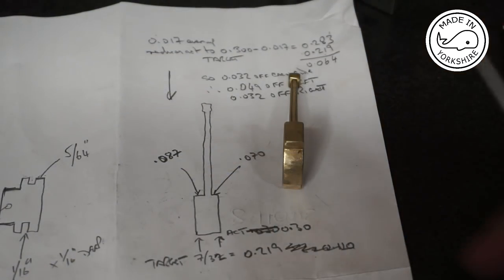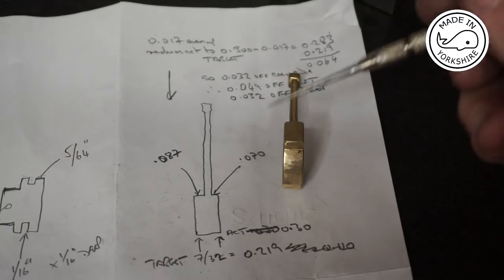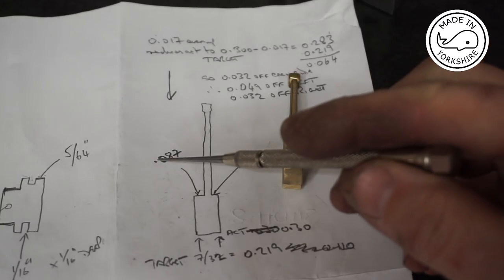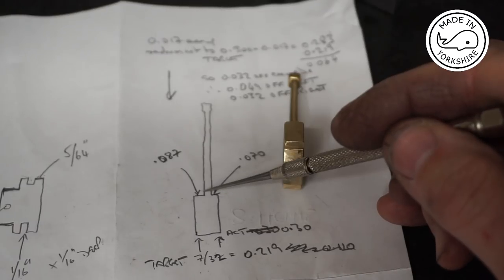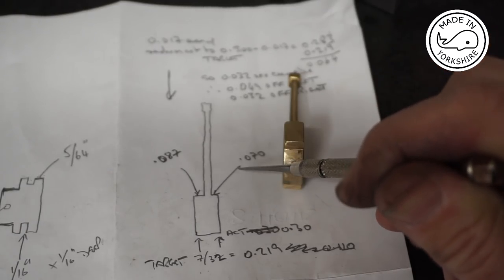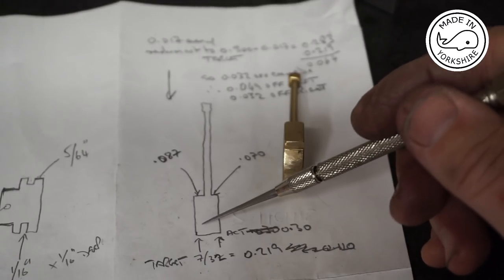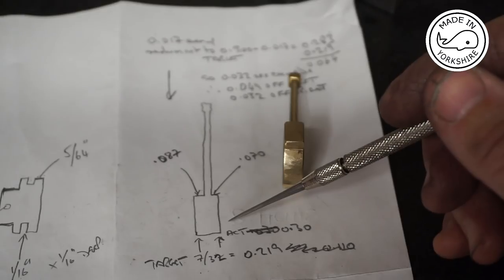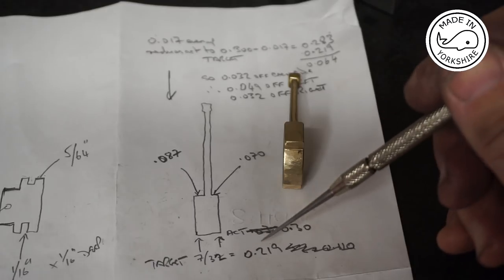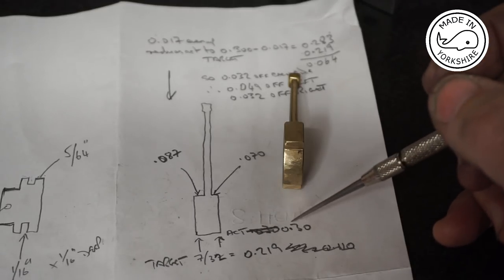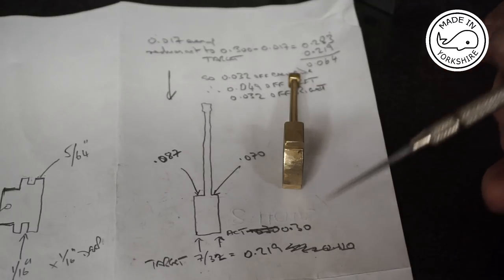I've tidied the sides up with a mixture of milling and hand filing. The thick edge is 0.087 to the side of the upright. The thinner edge is 0.070. Now the actual target I'm looking for is 7/32 of an inch which is 0.219. But it's actually at the moment 0.30. So for some maths.